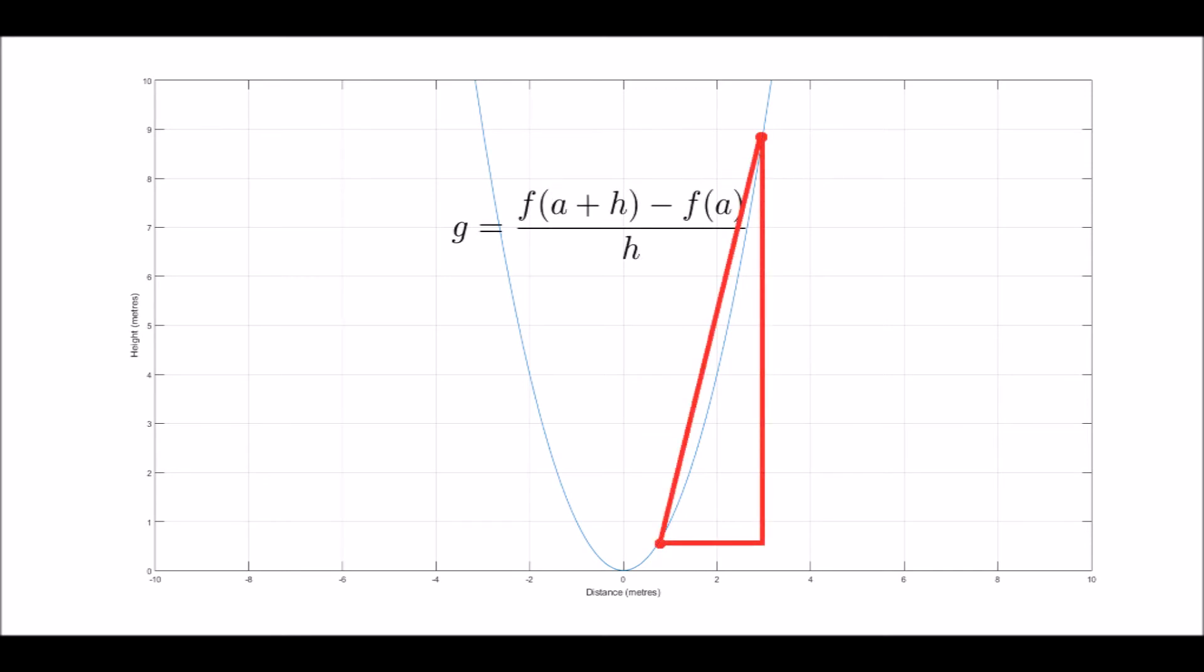But what if we decrease h, the distance between the points? Well the smaller h is, the closer the points are together, so the closer the gradient between the points is to the actual gradient at point A. Which you can see here, the line between the points becomes a closer approximation to the curve, the smaller h is.